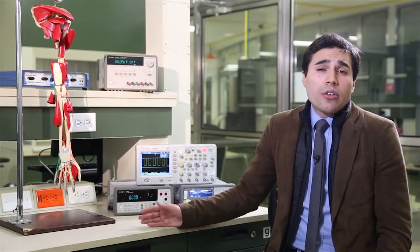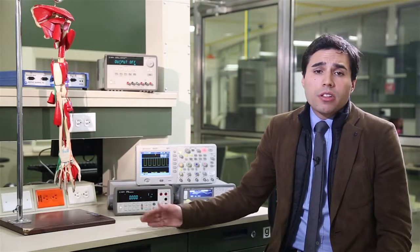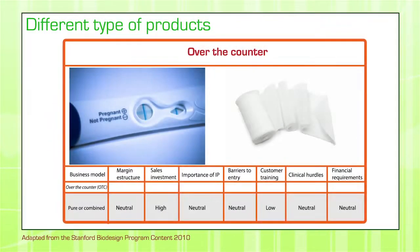There is also the over-the-counter business model, which includes things like pregnancy tests and other products available at a pharmacy. It's a simple model — the patient goes and buys the product. One important consideration is that clinical hurdles tend to be more than neutral and can be high if the risk of misdiagnosis or mistreatment is significant enough to concern the FDA.